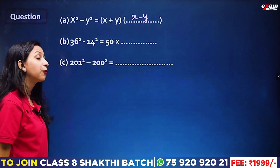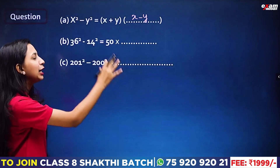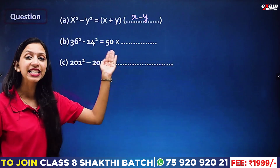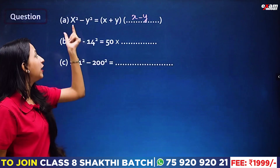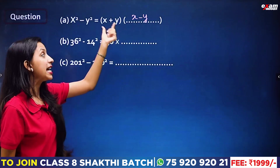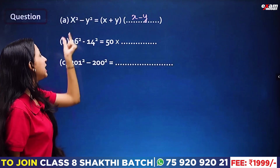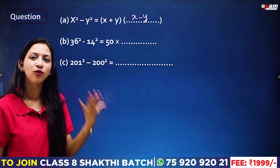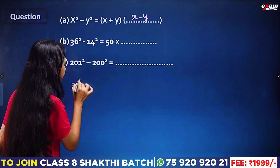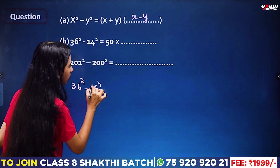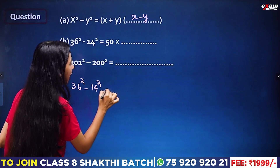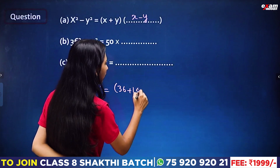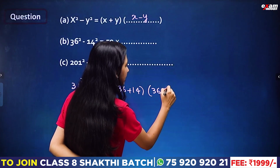36² - 14² is equal to 50 into something. Here, x² - y² equals x plus y into x minus y, where x is equal to 36 and y is equal to 14. So 36 squared minus 14 squared equals 36 plus 14 into 36 minus 14.